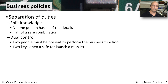Another type of separation of duties is dual control. This is where you have to have more than one person in order to perform a business function. For instance, there may be a safe that has multiple keys, and the safe can only be opened if everyone shows up with their key, puts it in, and turns it. Without having everybody there, the safe won't open.